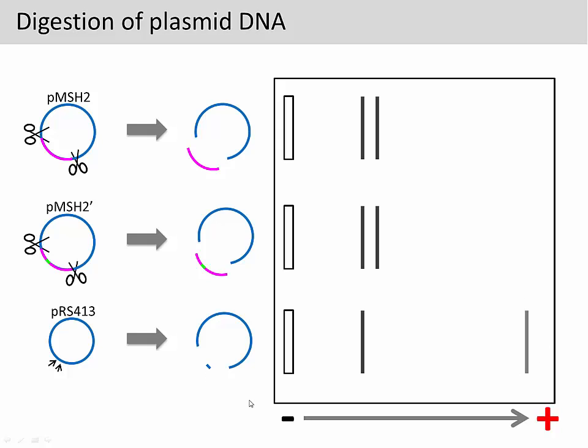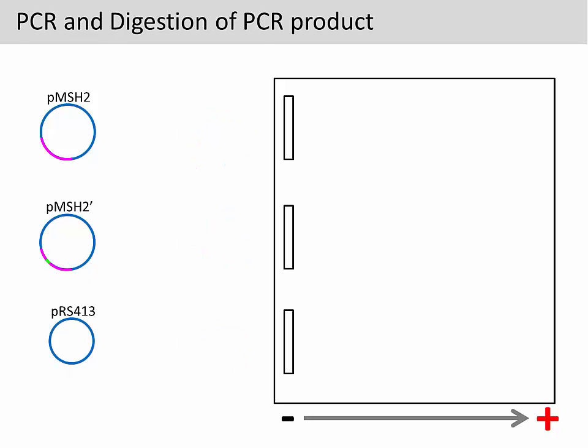After this experiment, we still cannot distinguish the pMSH2 from the pMSH2 prime plasmid. In order to achieve this goal, we need to use a restriction enzyme that is specific to the wild type or the mutant allele.